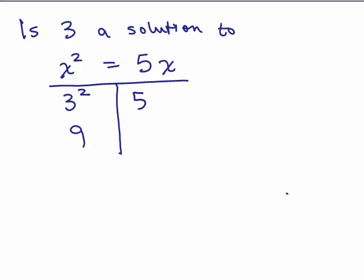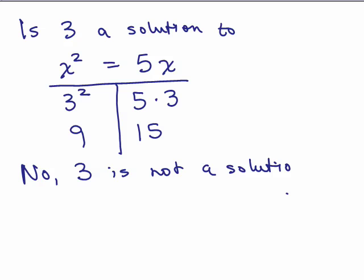And, then, we're going to put in 3 for x on the right-hand side. 5 times 3 is 15, and so, no, 3 is not a solution.